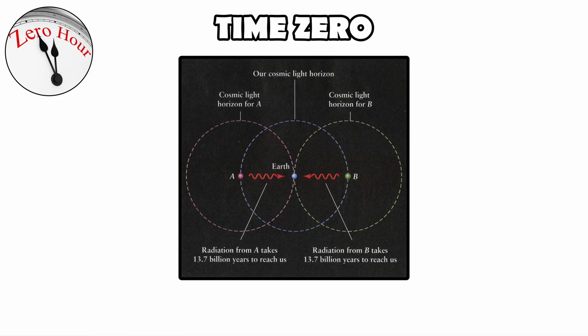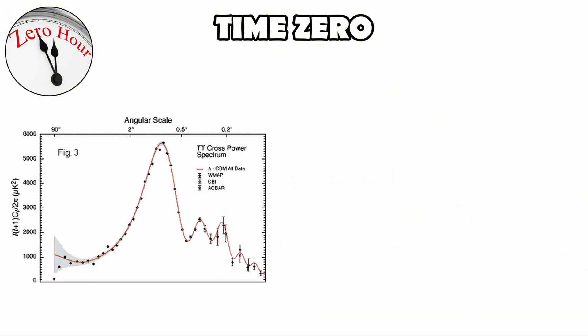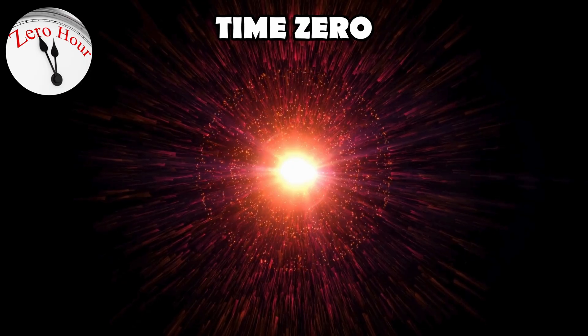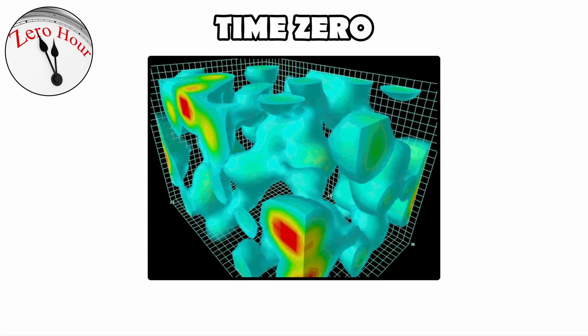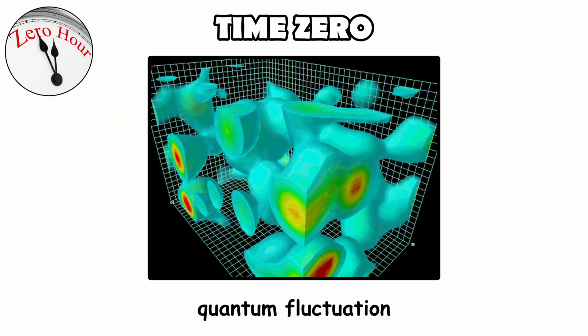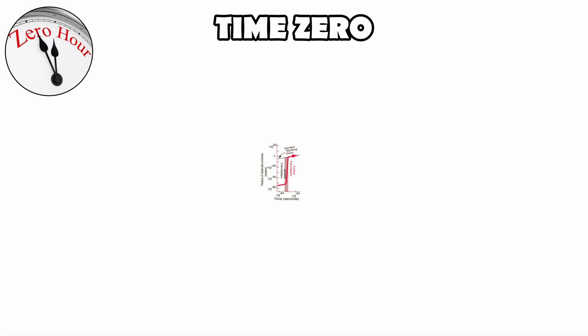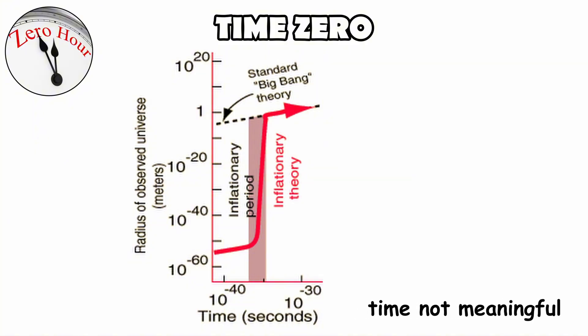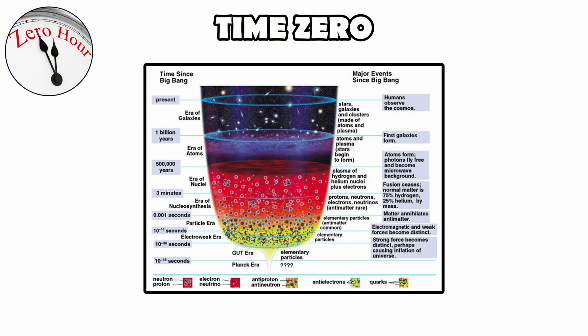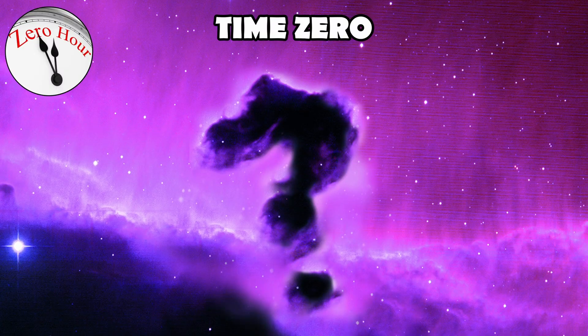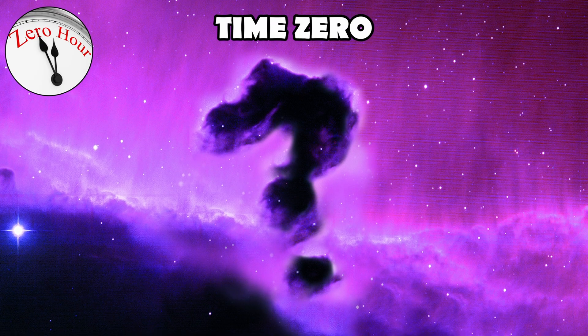That means while we can trace the history of the cosmos through its earliest moments of rapid inflation, nucleosynthesis, and the release of the cosmic microwave background, the moment of creation itself remains mysterious. Some models suggest the universe could have emerged from a quantum fluctuation, others that it was preceded by a contracting phase, and others still that time itself may not be meaningful before the Planck time. So while the Big Bang model gives us an extraordinarily detailed picture of the early universe, it does not claim certainty about time zero. The very origin remains one of the deepest open questions in physics.